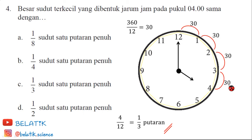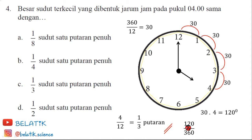Apabila kita jumlahkan semua, itu sama dengan 30 dikalikan 4, sama dengan 120 derajat. Untuk mencari putarannya, 120 dibagi 360, karena dalam lingkaran sekali berputar adalah 360 derajat. Maka hasilnya sama-sama 1 per 3 putaran.